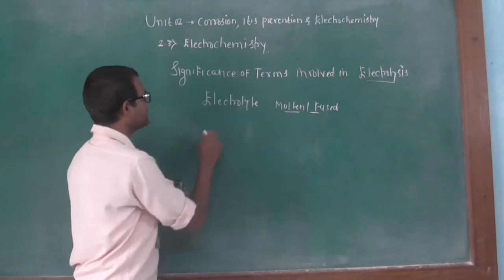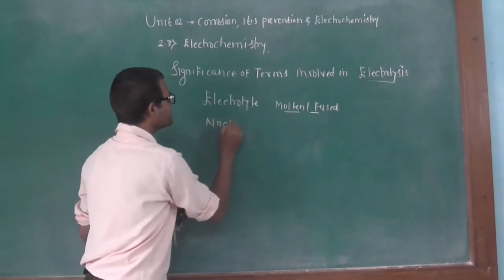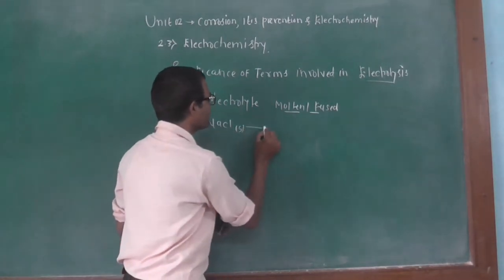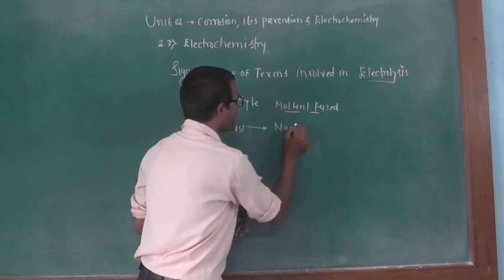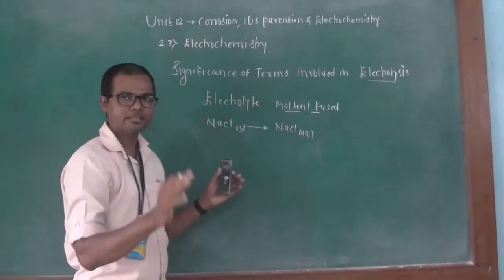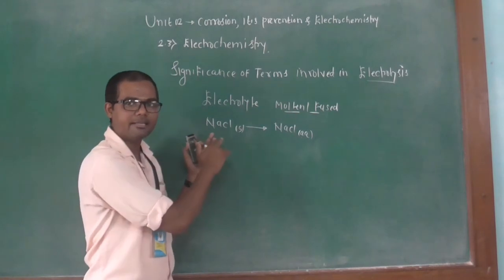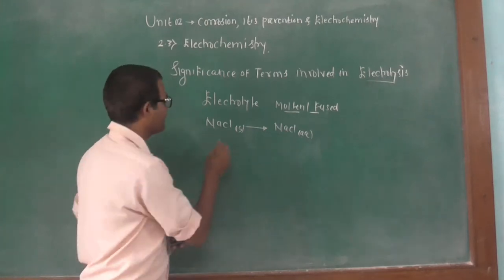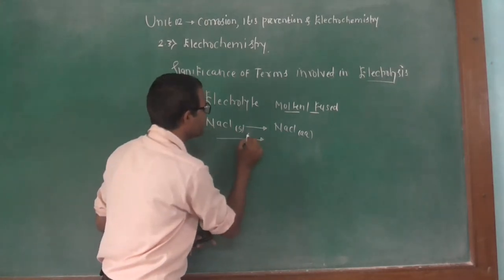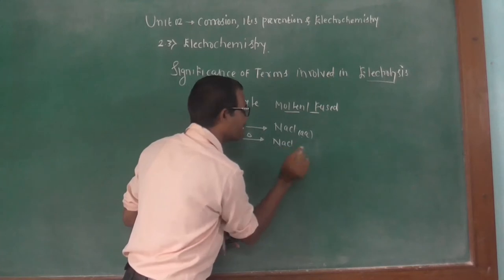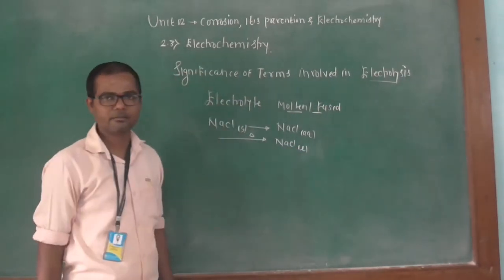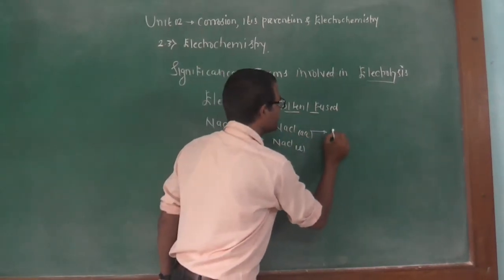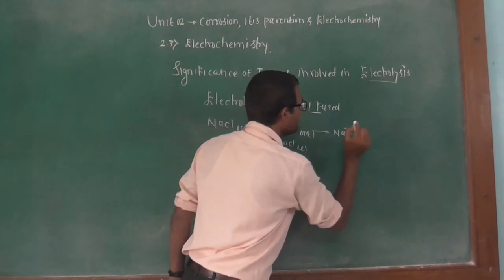For example, NaCl is a substance in solid state. When we add water, we get NaCl solution — that is an electrolyte in aqueous state. When NaCl is heated, we get NaCl in a molten state. In both cases, ionization takes place and we get Na⁺ and Cl⁻ ions. So that substance is said to be an electrolyte. Examples include acids like HCl and H₂SO₄, and bases like NaOH and KOH. Ionic salts like NaCl and KCl are also examples of electrolytes.